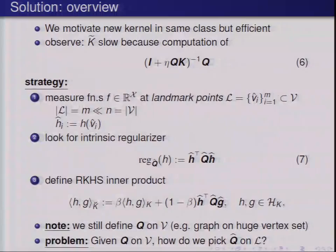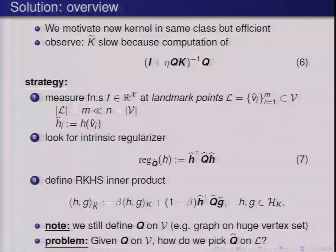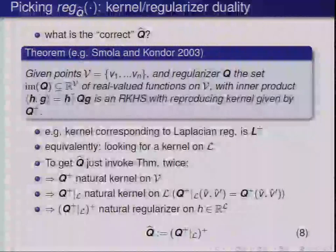An important thing to note: we're still defining a regularizer Q on the whole set V — for example, a graph on a huge vertex set. We're not throwing away this data and defining a regularizer on a subset only. We're defining a regularizer on functions over the whole set V, and then finding an intrinsic regularizer on the small landmark set that captures what the large regularizer is doing on V. We still get the robustness of building a large graph on the potentially large set V.